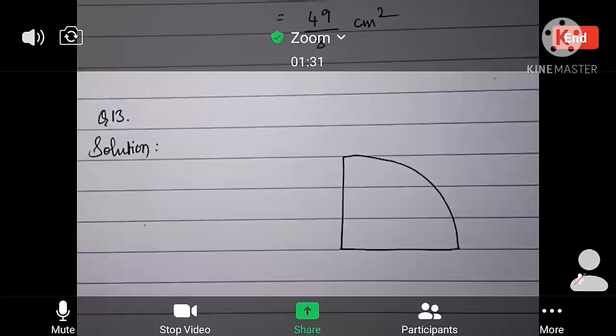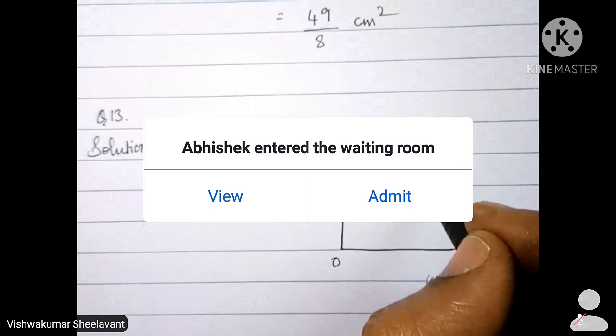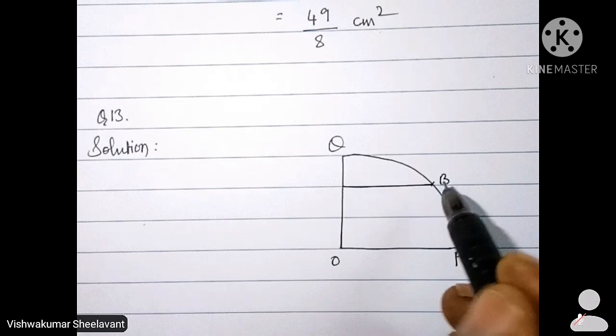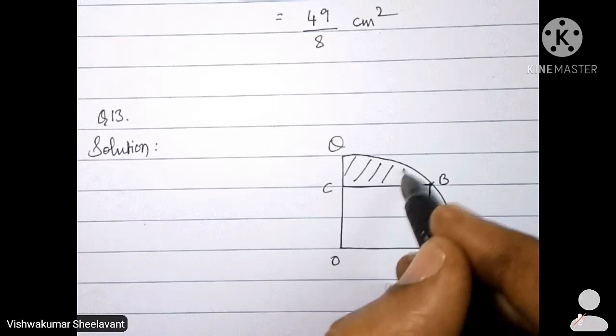So for reference purpose, I have redrawn the figure here. Quadrant OPBQ is here. Square OABC is here and this is shaded region.